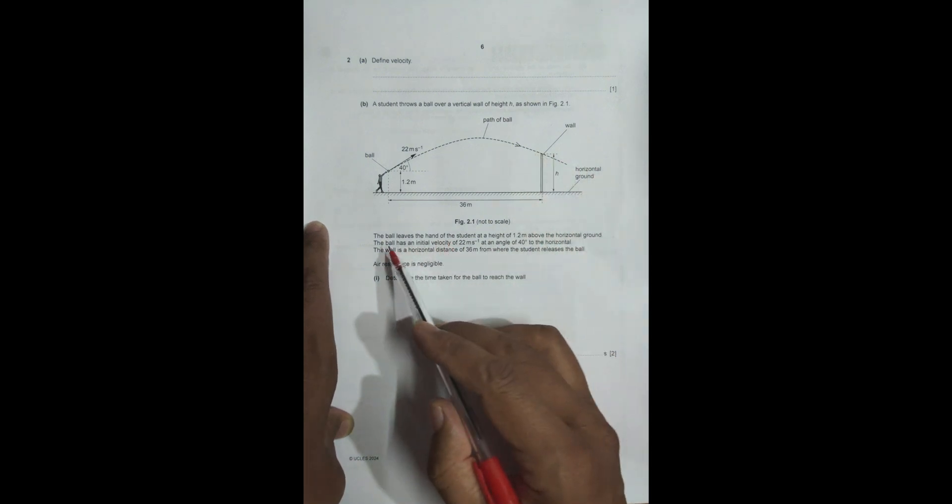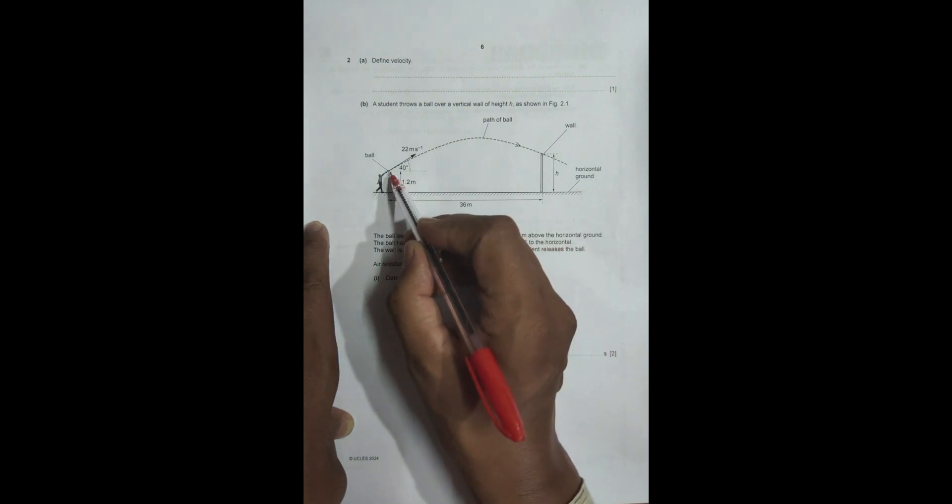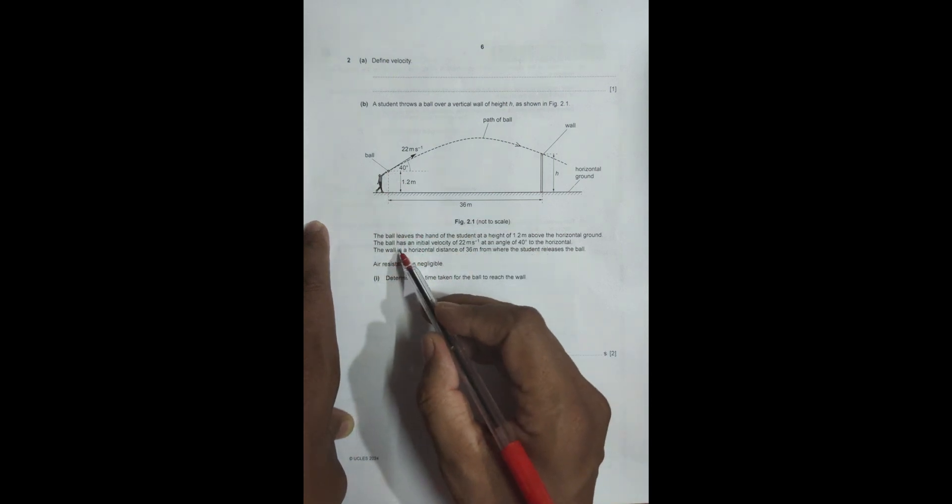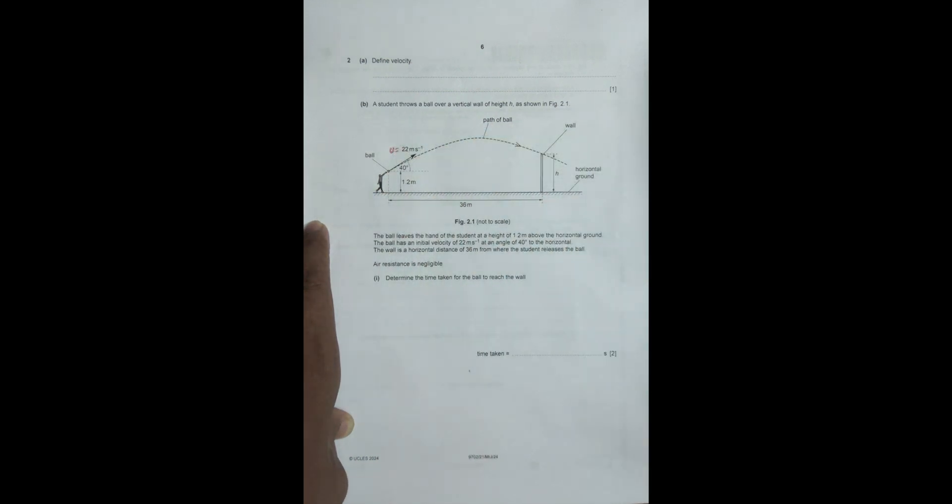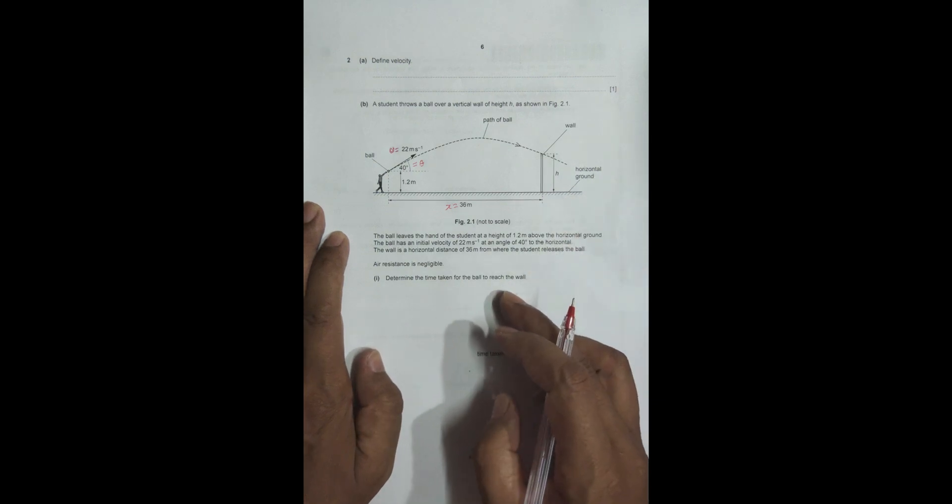The ball leaves the hand of the student at a height of 1.2 meters from the ground. The ball has an initial velocity of 22 meters per second, u equals 22 meters per second, at an angle of 40 degrees with the horizontal, so theta equals 40 degrees. The wall is at a horizontal distance of 36 meters from where the student throws the ball, so X equals 36 meters.